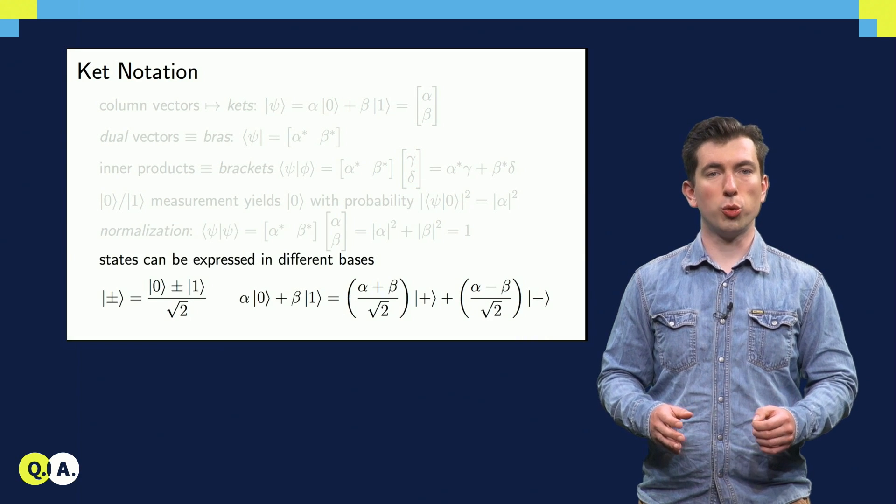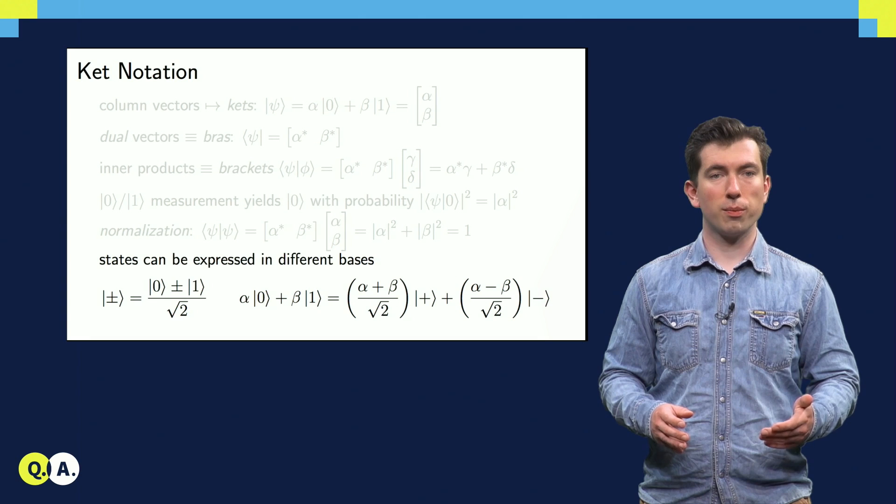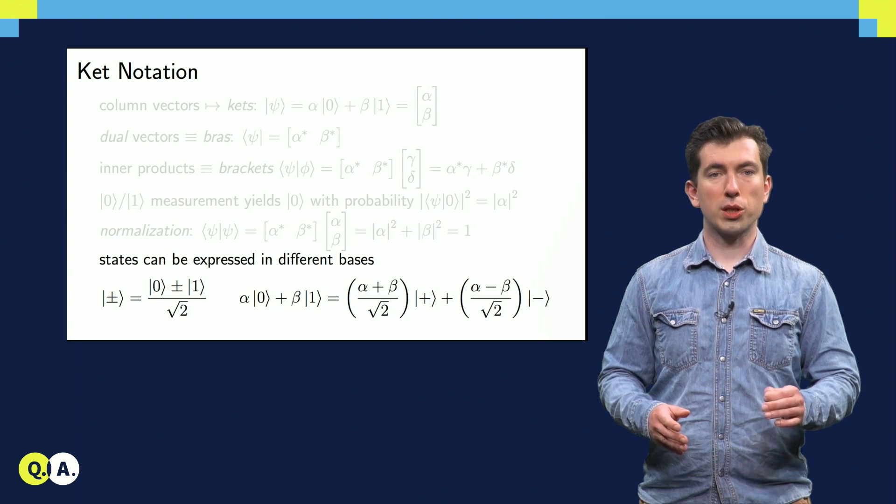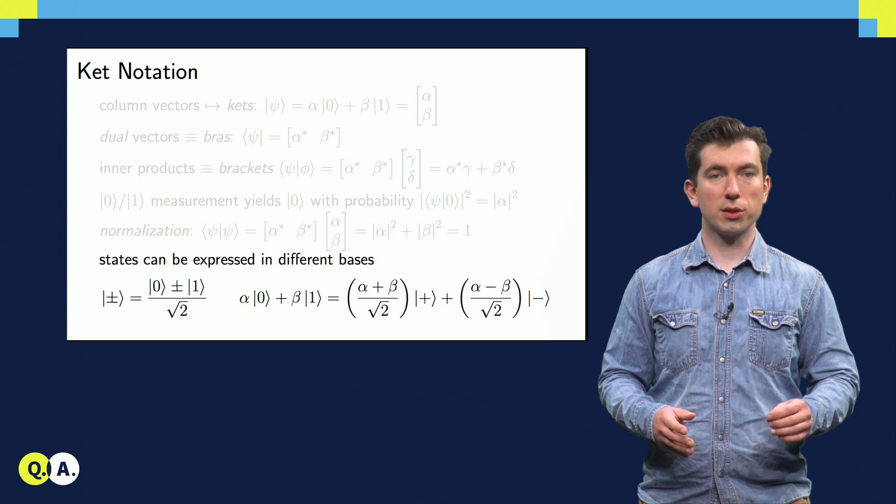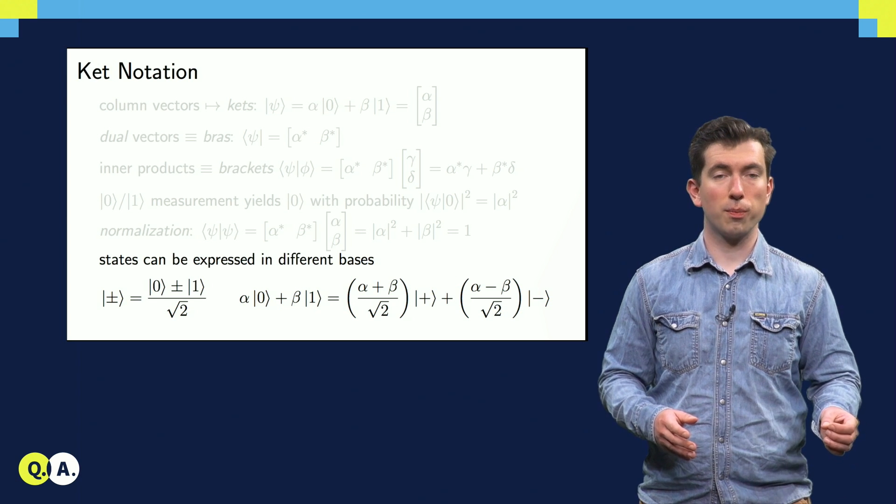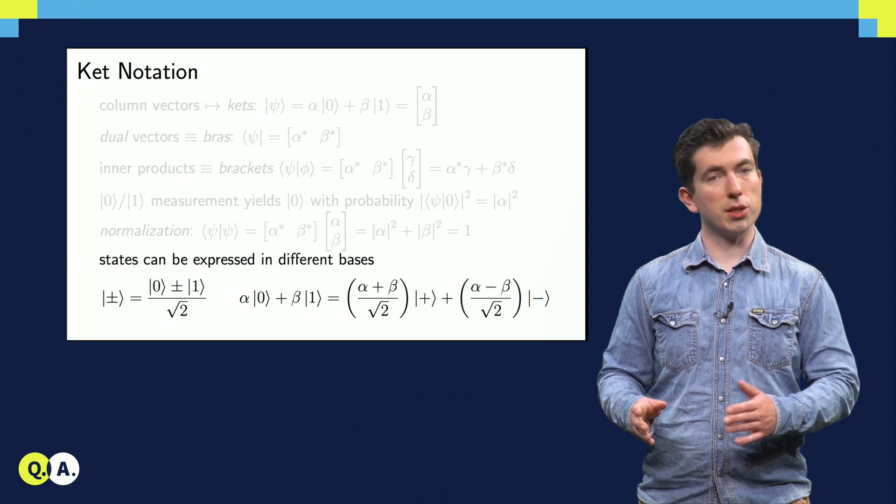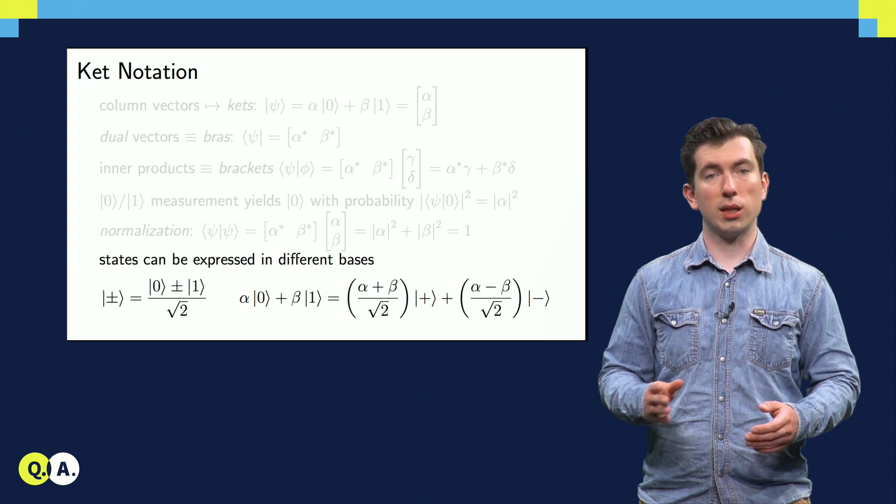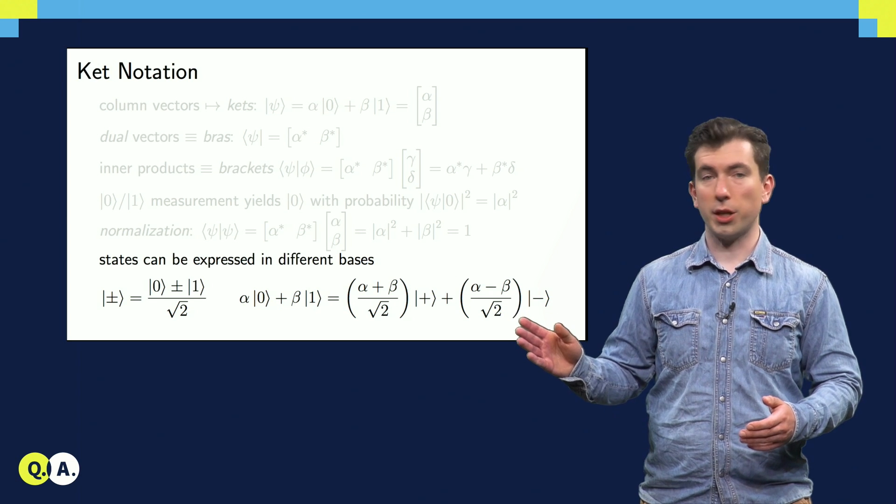We can also express qubit states in different bases. Consider the often used plus-minus basis, which consists of the normalized sum and difference of the 0 and 1 ket vectors. Given a state expressed in the 0, 1 basis, we can calculate the coefficients required to express the same state in the plus-minus basis.